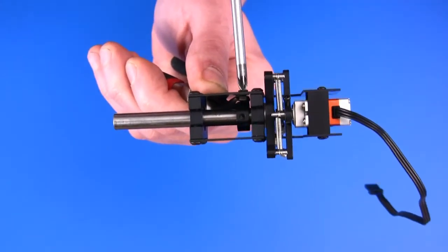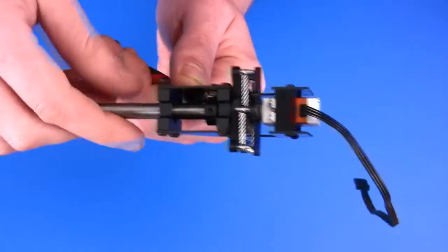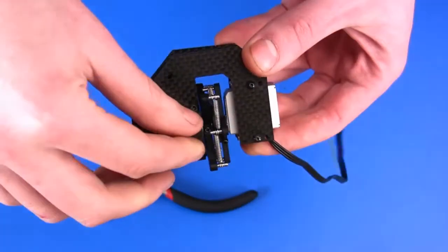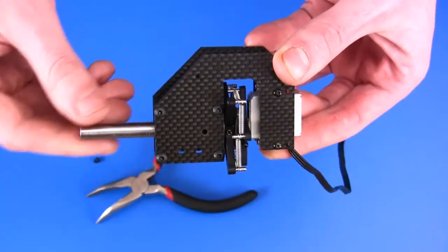The angle of rotation of the servo is limited. If you remove the rotation limiter, there will be a risk of wire tangling inside the servo.